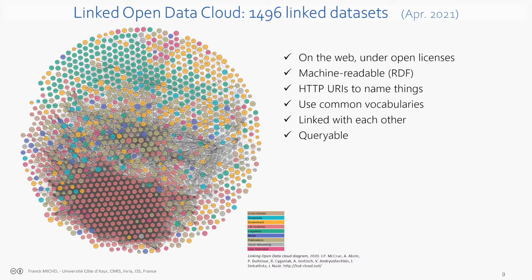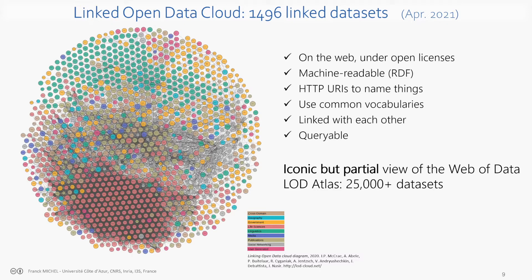This diagram is perhaps the only representation we have of the web of data, but it is actually very incomplete. The datasets represented here are just the ones explicitly registered by their authors, which means all the others that were not explicitly registered do not appear here but are still out there and probably very useful. There are some estimations that say there are about 25,000 datasets — many more than what we see here. But the general idea is that those datasets are published on the web and linked together.